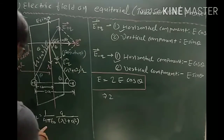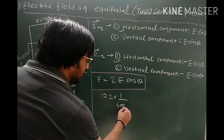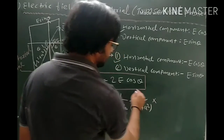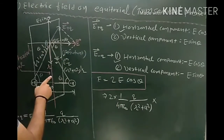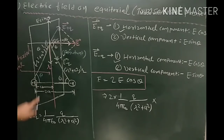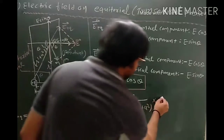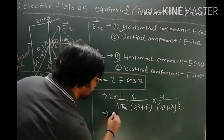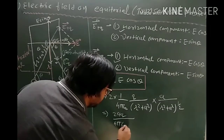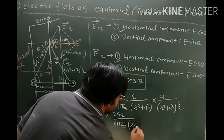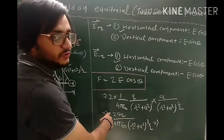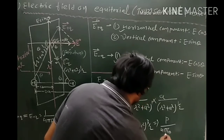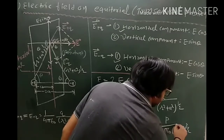Substituting E = (1 / 4πε₀) × q / (r² + a²) and cos θ = a / (r² + a²)^(1/2), we get the total field as 2 × (1 / 4πε₀) × q / (r² + a²) × a / (r² + a²)^(1/2), which simplifies to p / [4πε₀ × (r² + a²)^(3/2)], where p = q × 2a is the electric dipole moment.